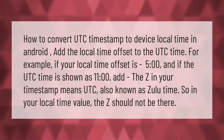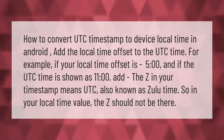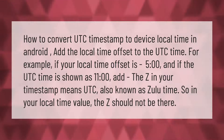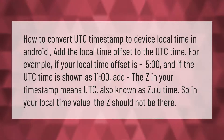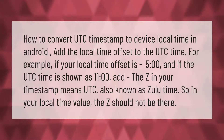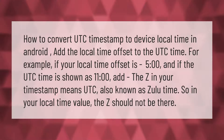How to convert UTC timestamp to device local time in Android: add the local time offset to the UTC time. For example, if your local time offset is 5 o'clock and the UTC time is shown as 11 o'clock, add the 'Z' in your timestamp — 'Z' means UTC, also known as Zulu time. In your local time value, the Z should not be there.